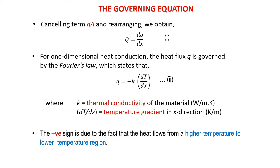By cancelling the term QA in the previous equation, we can obtain Q is equal to DQ over Dx. For 1D heat conduction, the heat flux is governed by Fourier's law, which states that Q is equal to negative K times the temperature gradient DT over Dx. The negative sign is due to the fact that the heat flows from a higher temperature to lower temperature region.